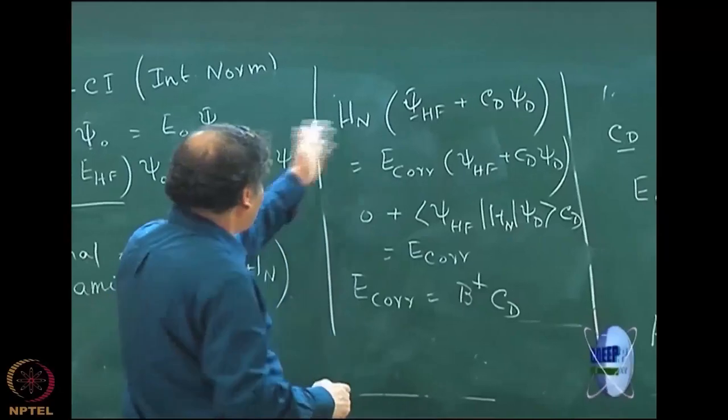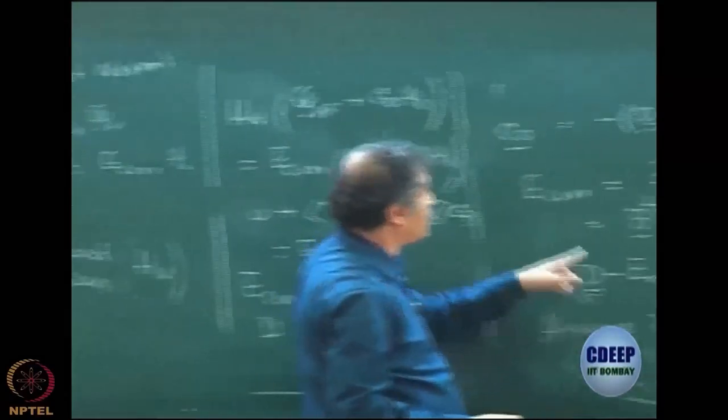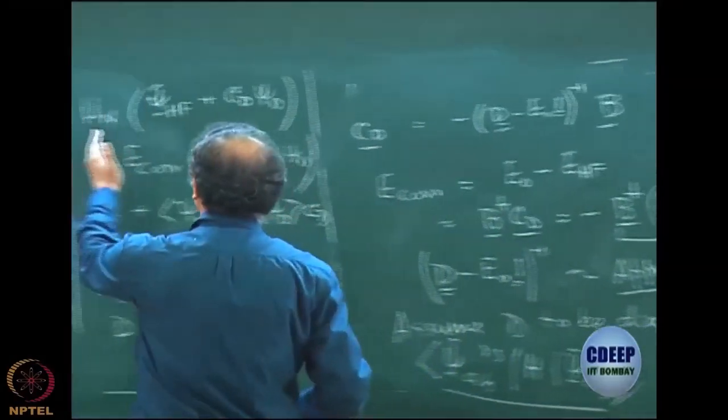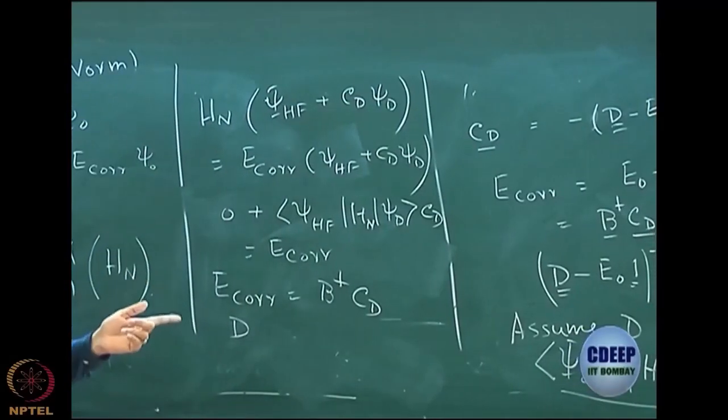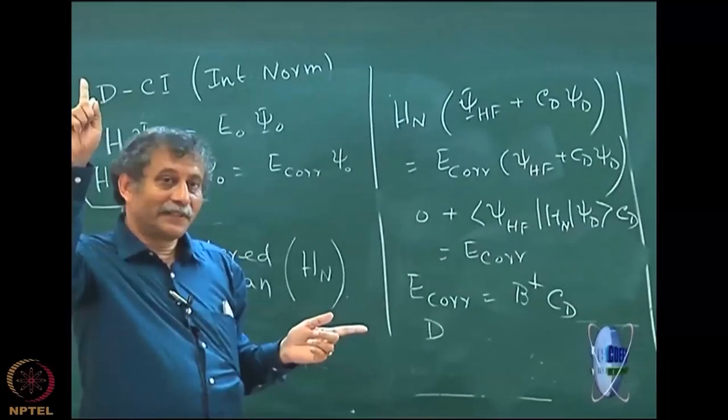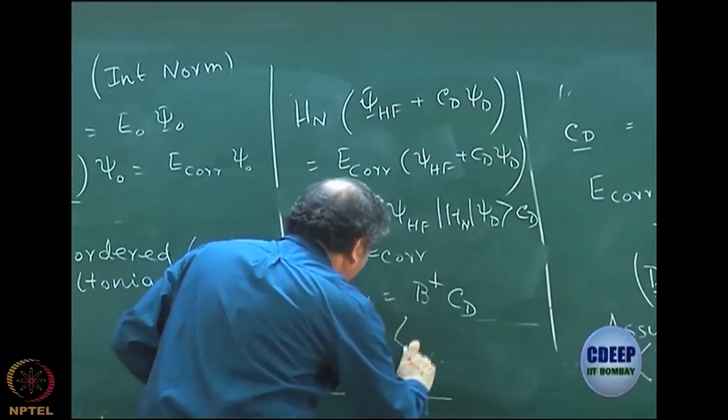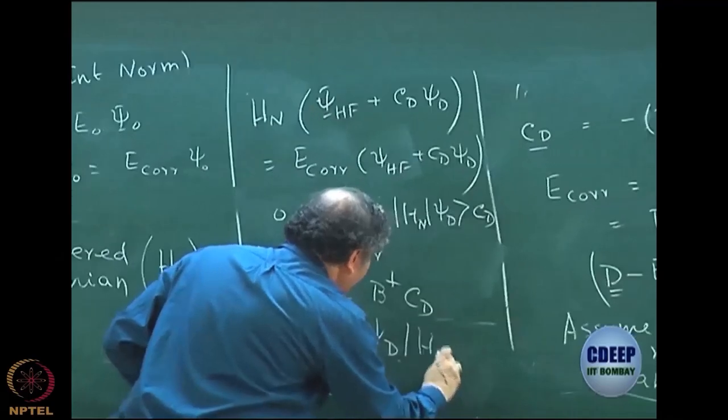Then you would put this in another psi d, another W excited. So you get D, I have already told you that matrix is D, right? The psi W excited H_N, but then now this D is different from the previous D because Hartree-Fock is subtracted, correct?